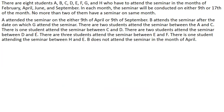Without wasting much time, let's go ahead. Here is the question: there are 8 students A, B, C, D, E, F, G and H who have attended a seminar in the months of February, April, June and September. So 8 students, 4 months. In each month, the seminar will be conducted on either the 9th or 17th of the month. No more than 2 of them have a seminar in the same month — so 2 in February, 2 in April, 2 in June, 2 in September, on the 9th and 17th.